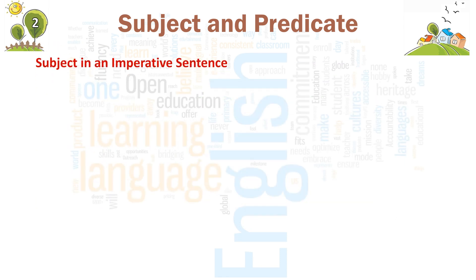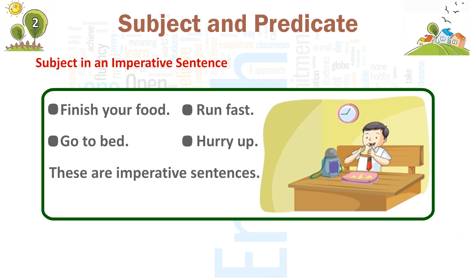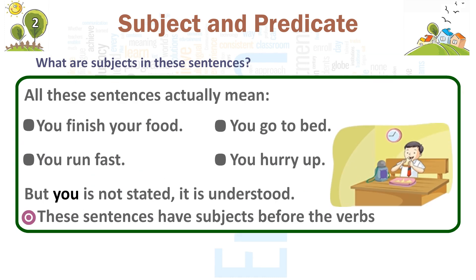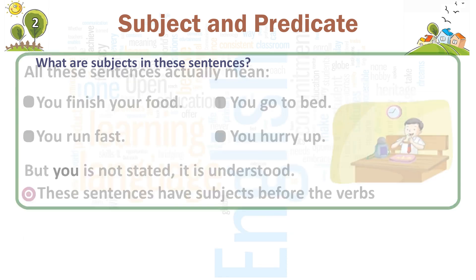Subject in an imperative sentence. 'Finish your food.' 'Run fast.' 'Go to bed.' 'Hurry up.' These are imperative sentences. What are the subjects in these sentences? All these sentences actually mean: 'You finish your food,' 'You go to bed,' 'You run fast,' 'You hurry up.' But 'you' is not stated — it is understood. These sentences have subjects before the verbs.